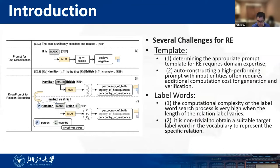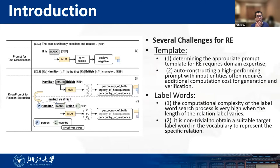However, when applying prompt tuning to relation extraction, there are several challenges. For the prompt template, determining the appropriate prompt template for relation extraction requires domain expertise. For the label word, it is not trivial to obtain a suitable target label word in the vocabulary to represent the specific relation. For example, the relation labels of 'country' and 'city of headquarters' cannot specify a single suitable label word in the vocabulary.